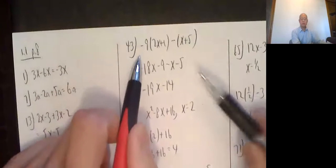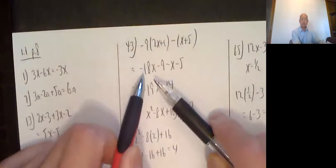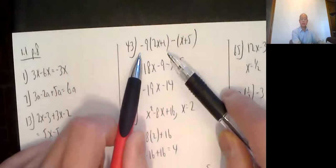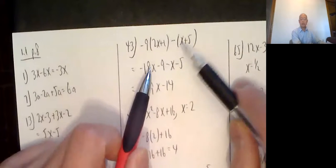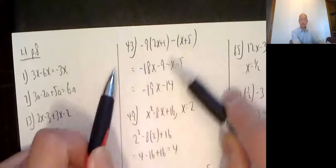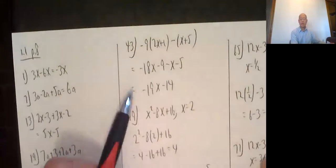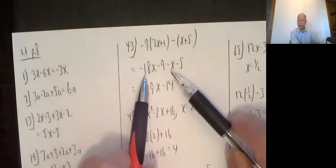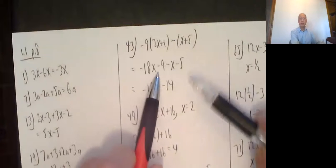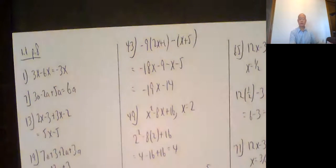43, very similar. Negative 9 times each of these. So negative 9 times 2x is negative 18x. Negative 9 times 1 is negative 9. This minus distributes, just changes each sign. So negative x minus 5. Then combine x with x and number with number. Negative 18x minus 1x. You pretend there's a 1 there. So negative 18 minus 1 is negative 19x. And then number with number, negative 9 and negative 5 gives me a negative 14.